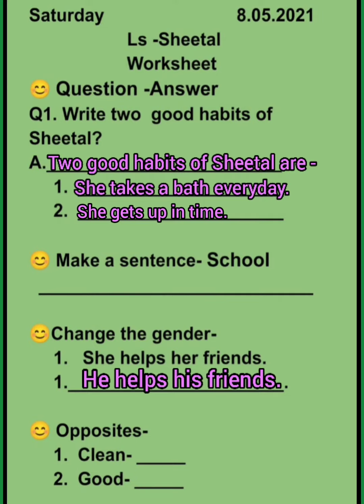Now the last work is opposites. The first word is 'clean' — the opposite of clean is dirty. And the second word is 'good' — the opposite of good is bad.